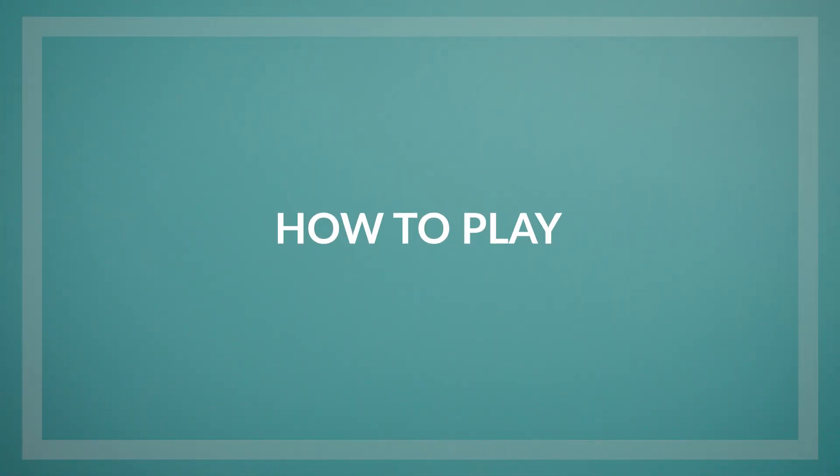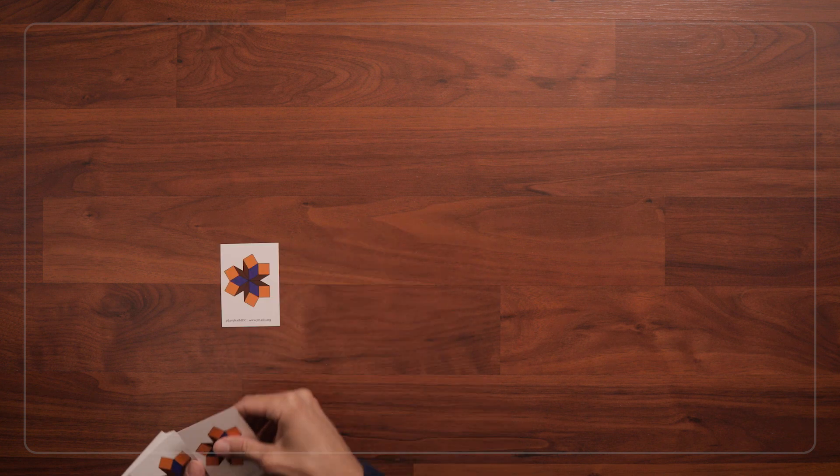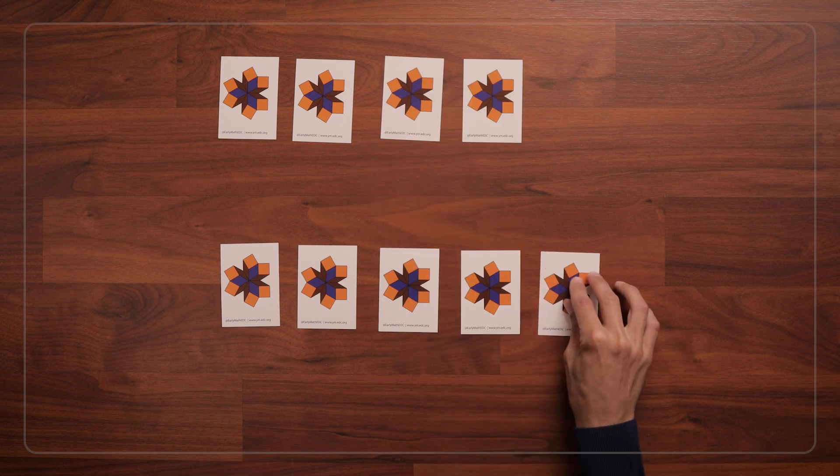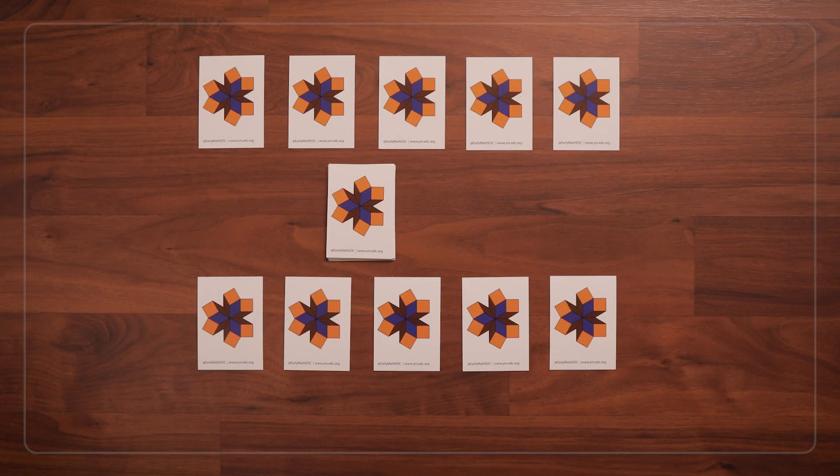To play Line Em Up, shuffle the cards and deal 5 cards face-down in a line to each player. Then put the remaining cards face-down in a pile in the middle.